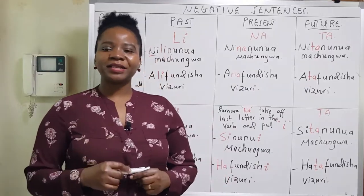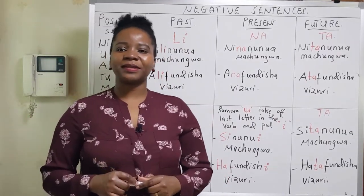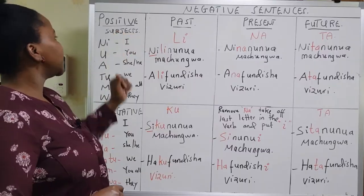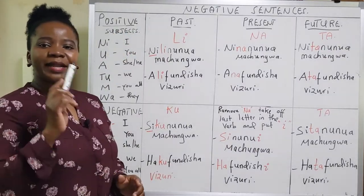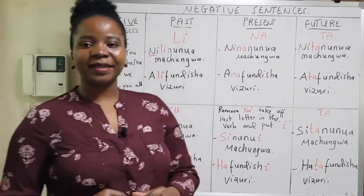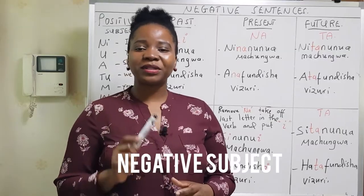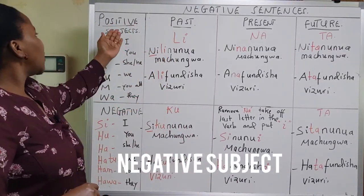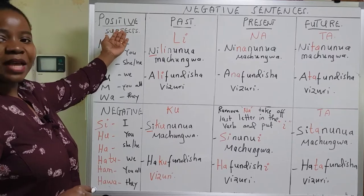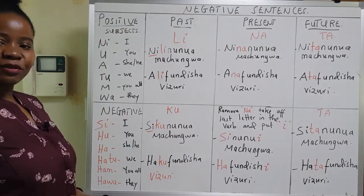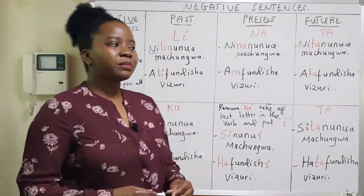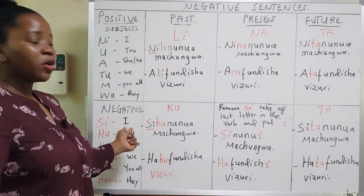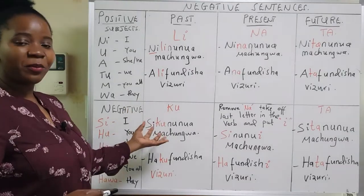In making a negative or positive sentence, we normally start with a subject prefix. You have to start with a subject prefix. We have positive subjects and negative subjects — that is today's topic.